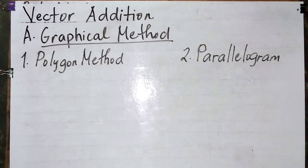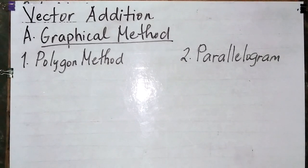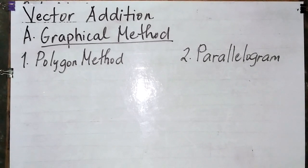Let's move on. We have two methods in vector addition: the graphical method and the analytical method. Under the graphical method, there are two sub-methods: the polygon method and the parallelogram method. The polygon method is the head-to-tail method, connecting vectors continuously. The parallelogram method draws parallel lines to the two adjacent vectors. In the graphical method, there are no formulas — it uses measuring devices: a ruler for the resultant and a protractor for the angle.